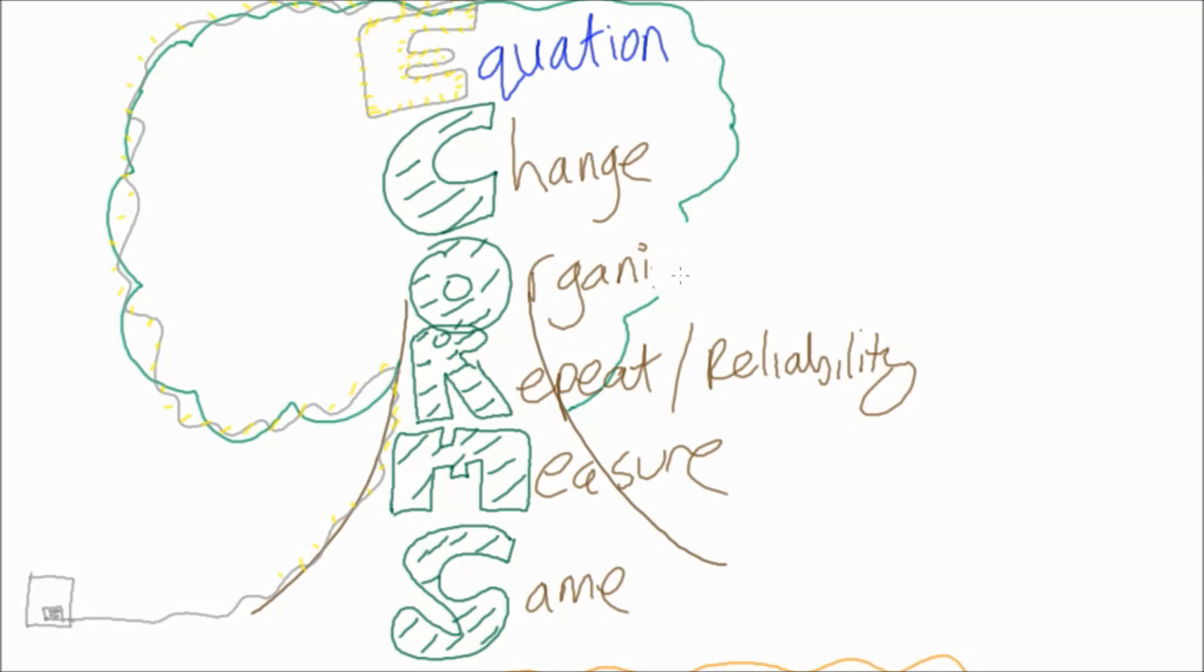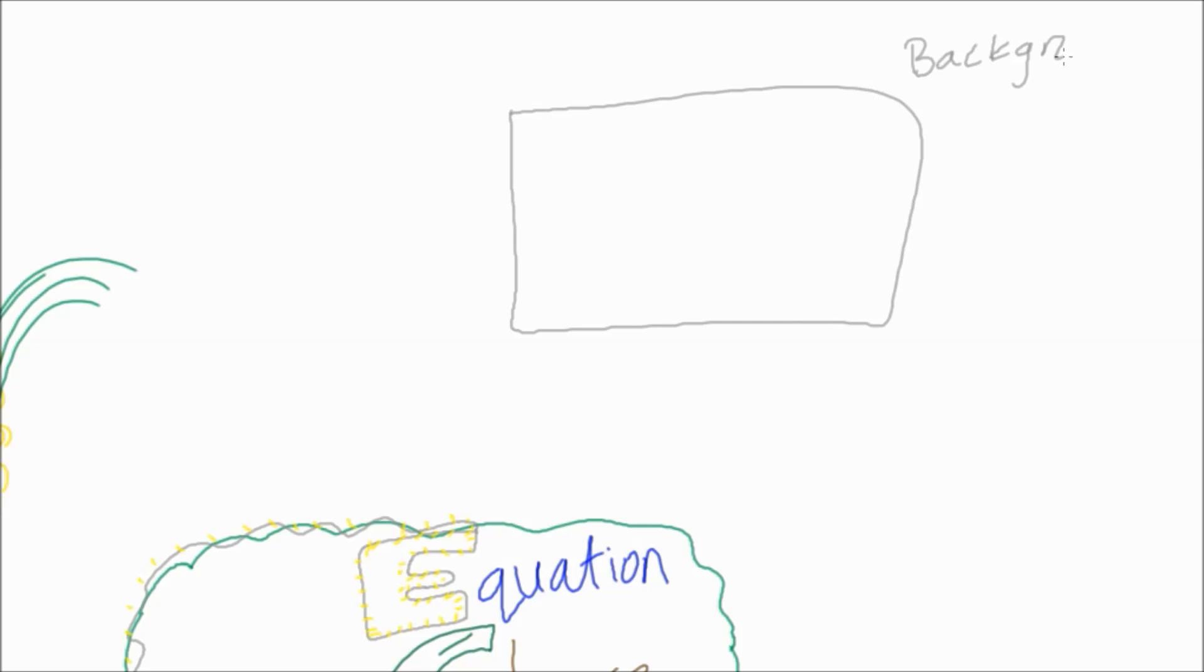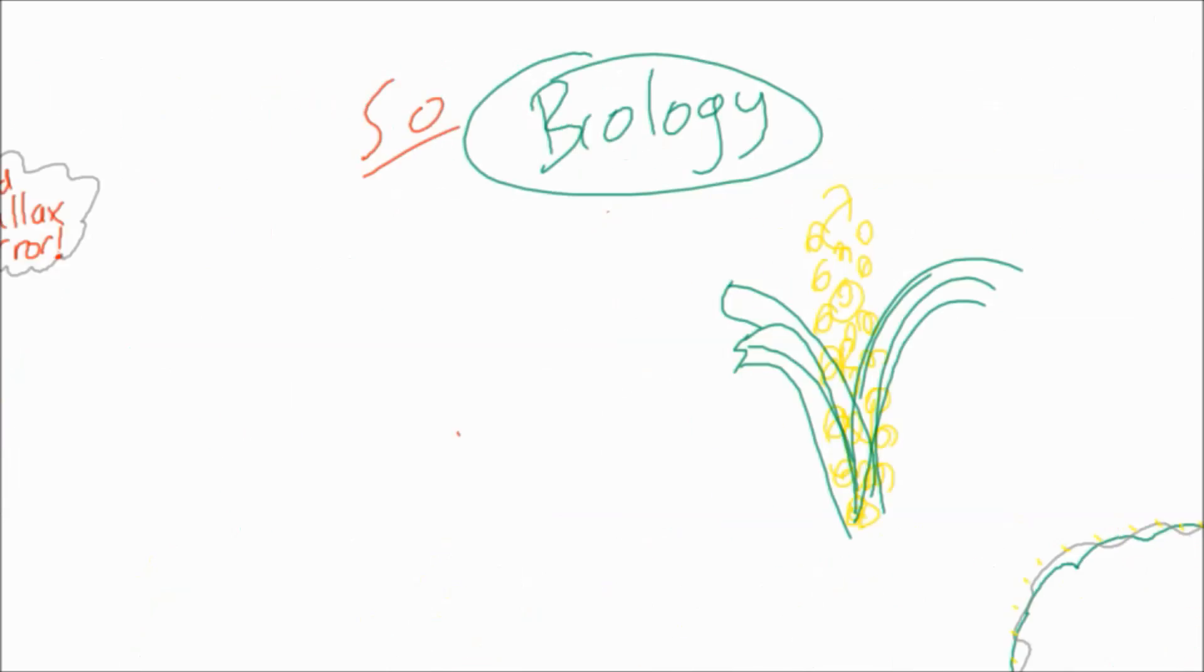So because we're physicists we don't really need an organism, so rather than take out the O we could change it. Maybe it makes more sense to just put other, and what I mean by other is: is there anything special about this practical we need to consider? For example, if it's measuring the background count, do we need to remove the radioactive source from the room, or just any other thing we can think about.